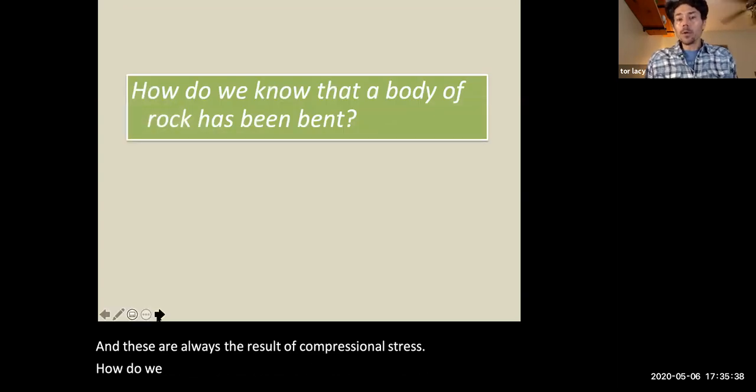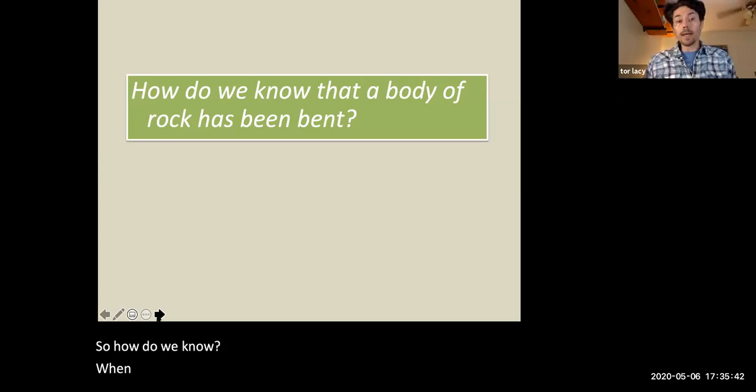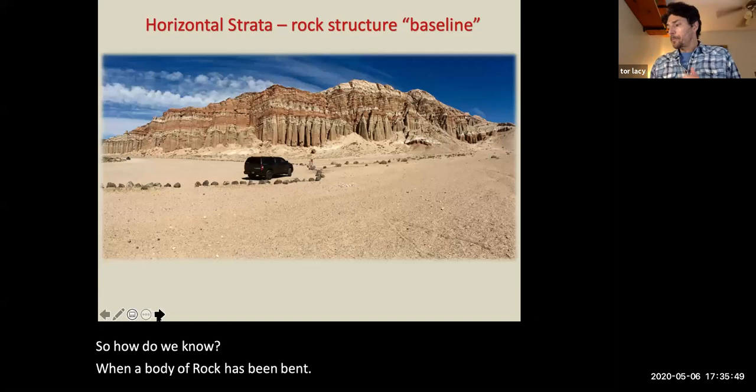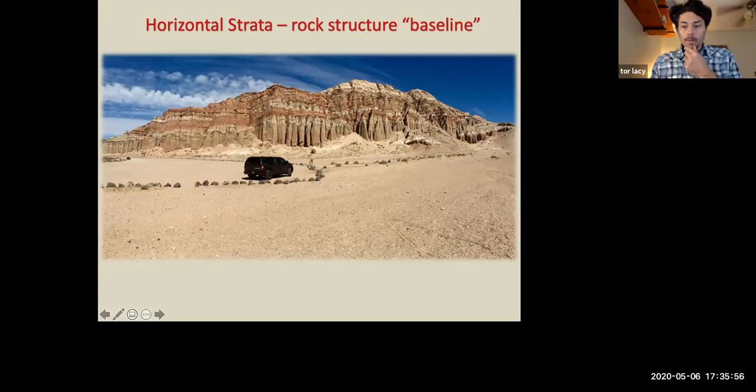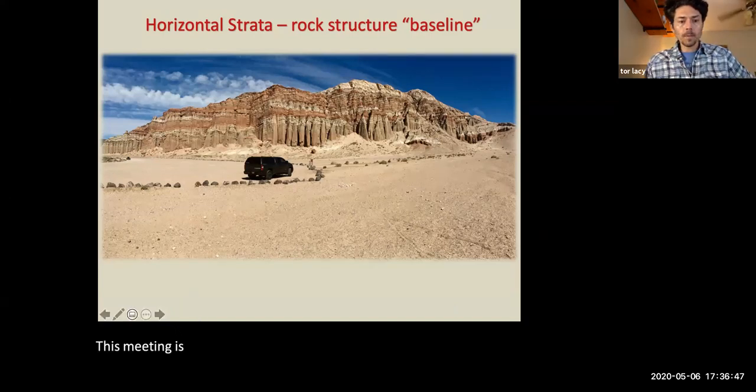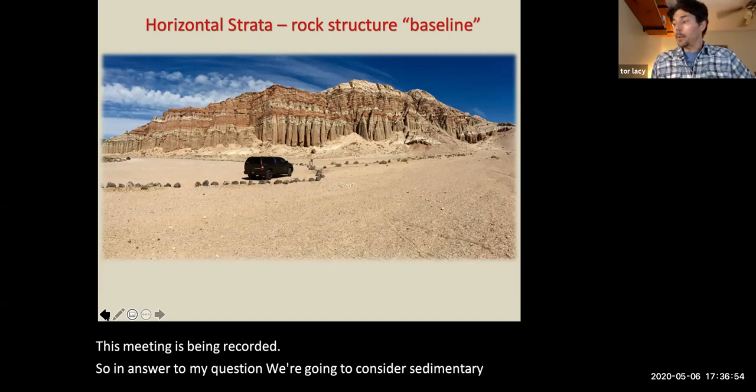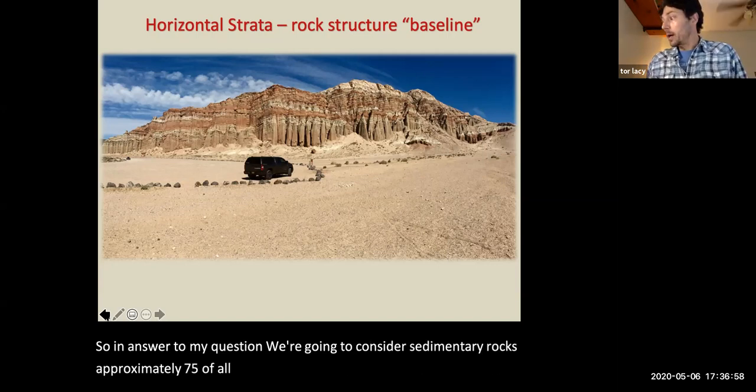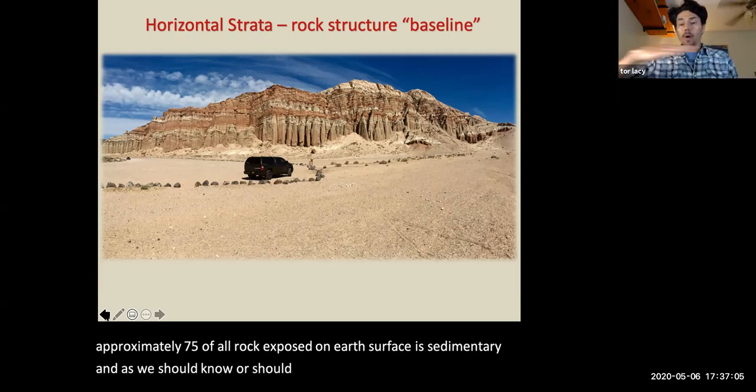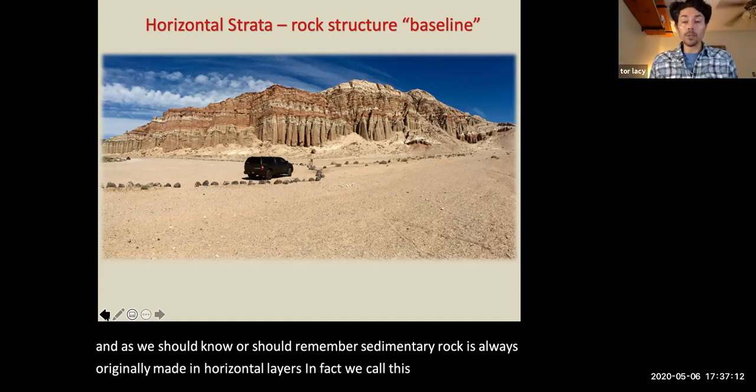So how do we know when a body of rock has been bent? So in answer to my question, we're going to consider sedimentary rocks. Approximately 75% of all rock exposed on Earth's surface is sedimentary. And as we should know or should remember, sedimentary rock is always originally made in horizontal layers. In fact, we call this the law of original horizontality.